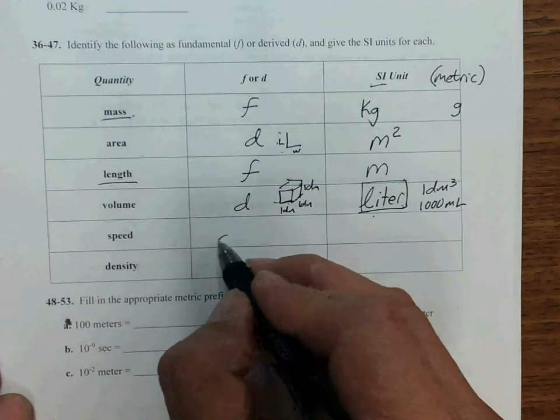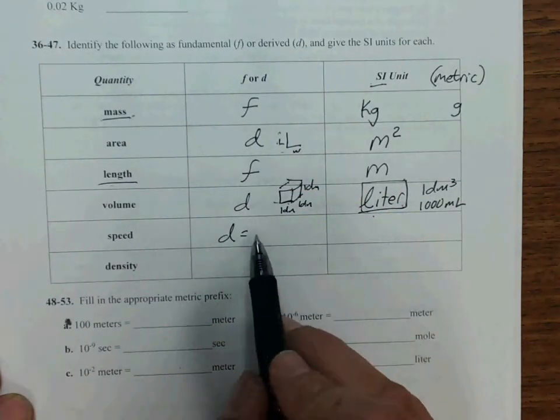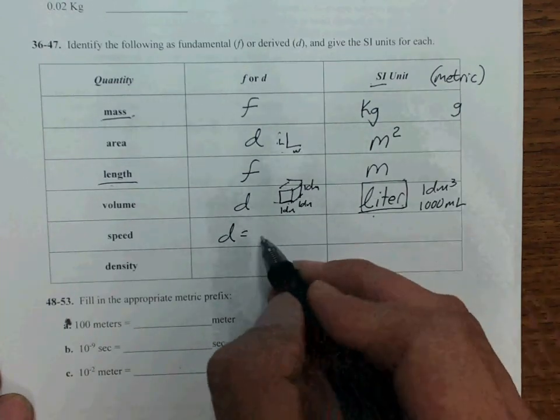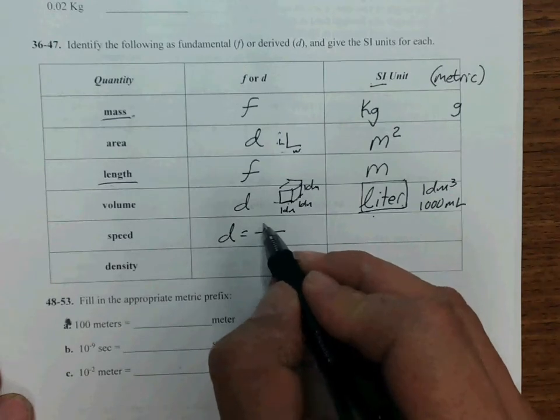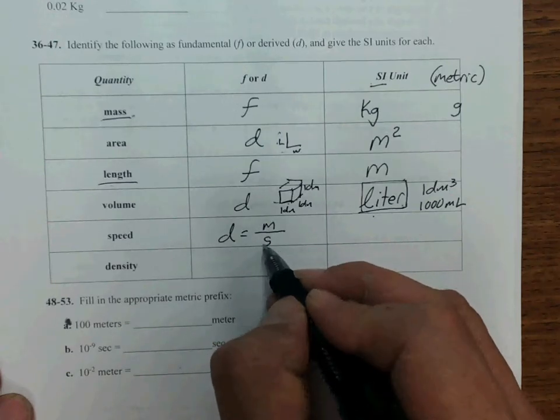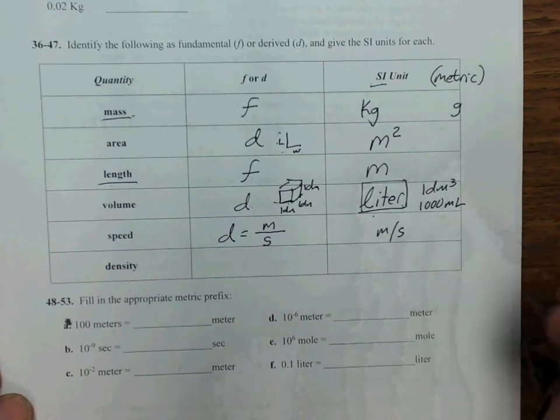For speed, we determined it's a derived unit. If we were in our car, we would measure our speed in miles per hour. But since we're using the SI unit, it's going to be meters per second.